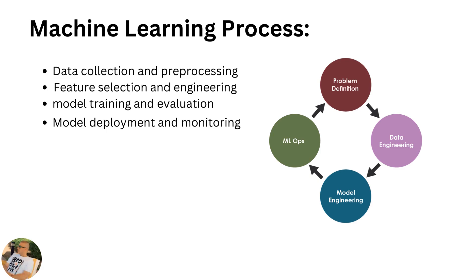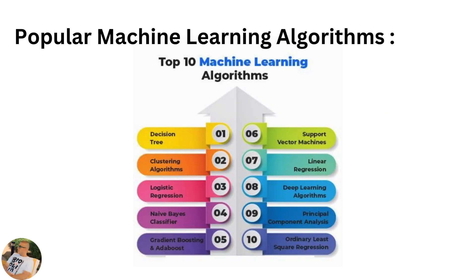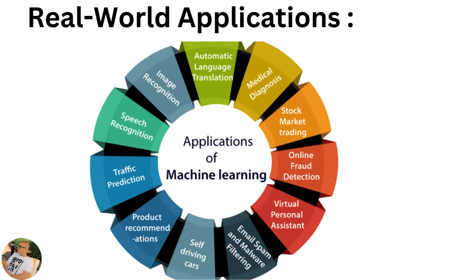We also have some popular machine learning algorithms, like decision tree, clustering, linear regression, support vector machine, and deep learning. Now we talk about some applications of machine learning.